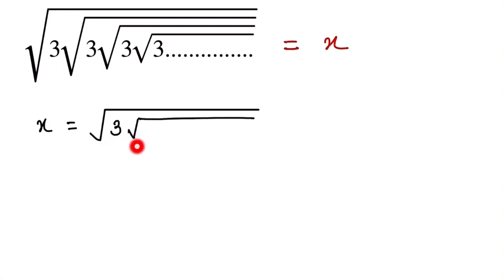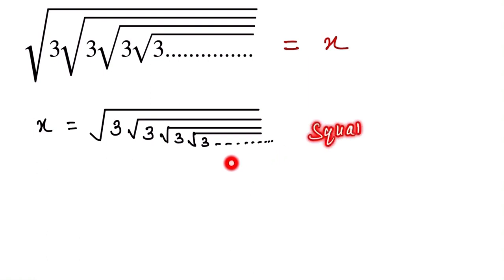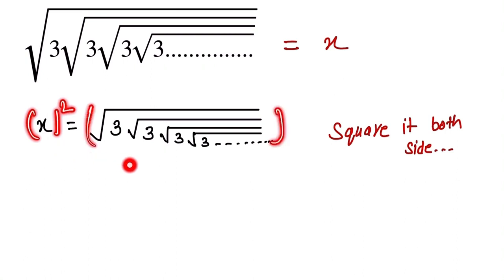So here we write x is equal to this equation: under root 3, and again under root 3, and again under root 3, it goes to infinity. So now we square it both sides.